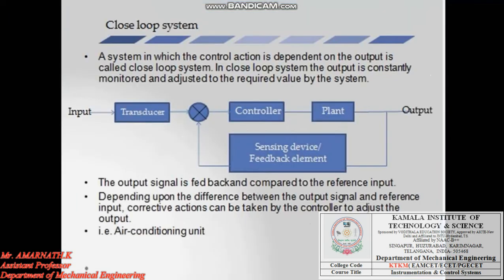Today's topic is about closed loop control systems. In the last lecture we studied the introduction to control systems — a control system is used to control some physical quantities. This control system is classified into two types: open loop control system and closed loop control system.